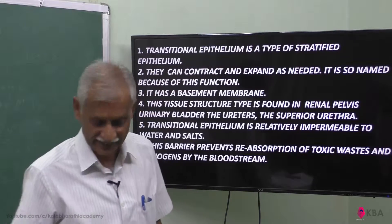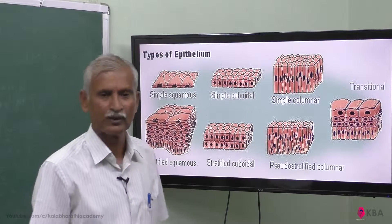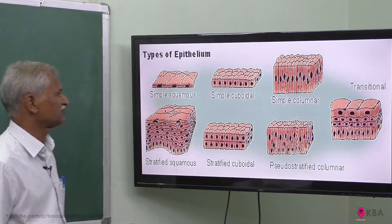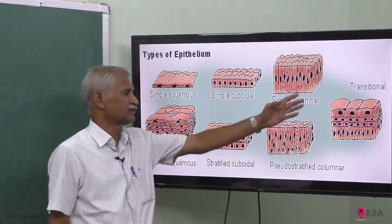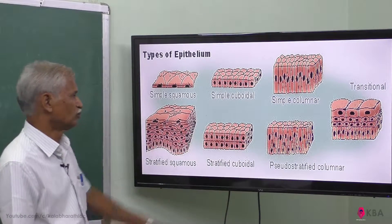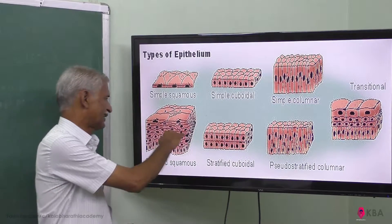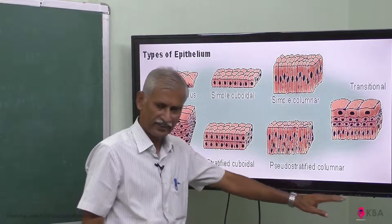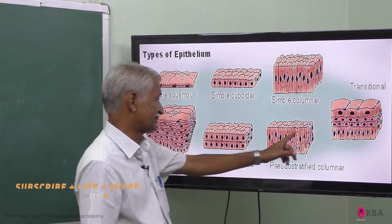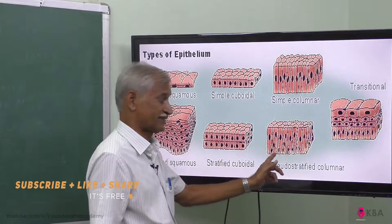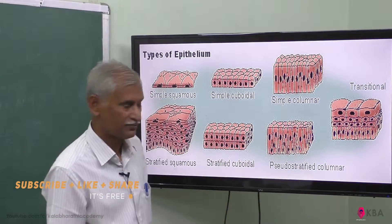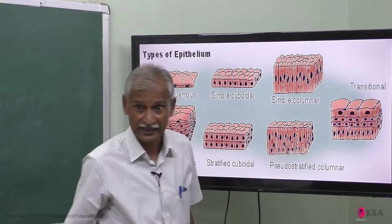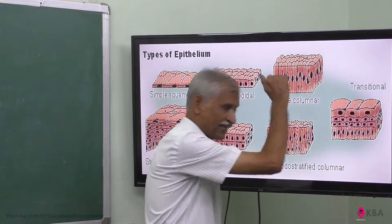This is the work of transitional epithelium. The types of epithelium include: simple squamous, simple cuboidal, simple columnar. Multi-layered types include stratified squamous, stratified cuboidal, and pseudo-stratified columnar — single cells but nuclei are in different places because the size varies. Transitional epithelium brings different types of cells together, but they are compactly packed.